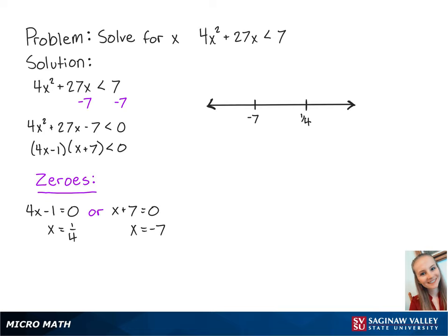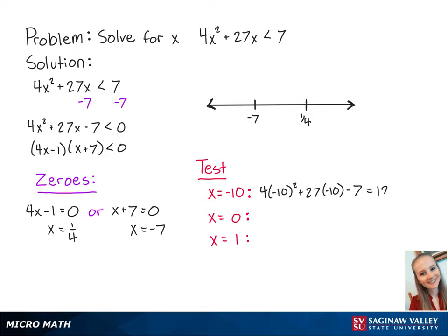Now that we have our zeros, we're going to use this number line to determine the values of x that make the inequality a true statement. We're going to do this by plugging in values of x from each region. For x equals negative 10, we have 4 times negative 10 squared plus 27 times negative 10 minus 7, which is equal to 123. This means that x values less than negative 7 will make the left side of the inequality positive. For x equals 0, we have 4 times 0 squared plus 27 times 0 minus 7, which is equal to negative 7. This means that x values between negative 7 and 1 fourth will make the left side of the inequality negative.